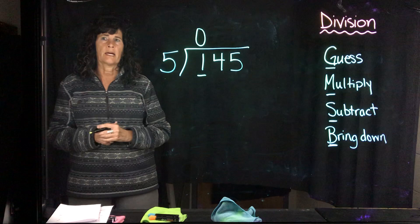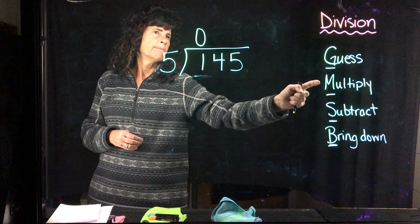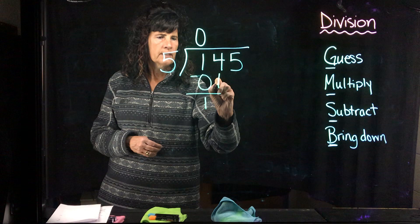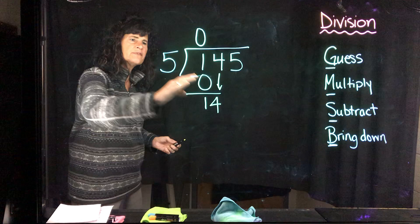Now, I'm going to multiply. 0 times 5 is 0. Subtract. 1 minus 0 is 1. Bring down the 4. Okay. Back up to here. How many 5's can fit into 14?